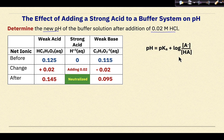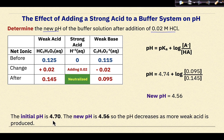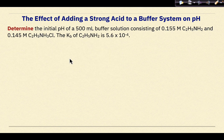We use the Henderson-Hasselbalch equation with our pKa of 4.74 and the new concentrations. pH equals 4.74 plus the log of 0.095 divided by 0.145. The new pH is 4.56. The initial pH was 4.70 and the new pH is 4.56, so the pH decreases as more weak acid is produced. Notice that the decrease is relatively small because a buffer was involved.